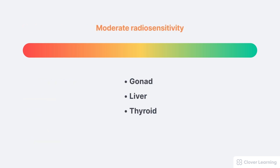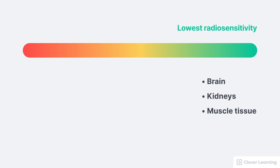Some tissues with moderate radiosensitivity are the gonads, liver, and thyroid. Some tissues with the lowest radiosensitivity are the brain, the kidneys, and muscle tissue. These tissues are the least likely to experience the damaging effects of radiation like cell death or cell mutation. It takes much higher radiation dose for these tissue types to be harmed, as they have the lowest concentration of immature, unspecialized, rapidly dividing cells.